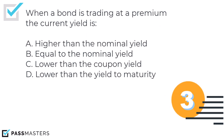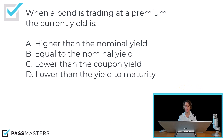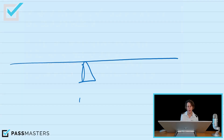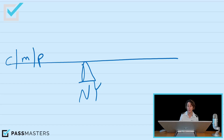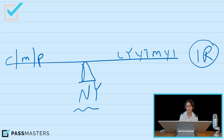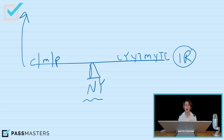Our last question for this video. When a bond is trading at a premium, the current yield is: higher than the nominal yield, equal to the nominal yield, lower than the coupon yield, or lower than the yield to maturity? How should you answer this question? With the teeter-totter, of course. The nominal yield never changes. We have the market price on one side, and the driver of the teeter-totter is interest rate changes relative to the nominal yield. There is current yield, yield to maturity, and yield to call. Here the bond is trading at a premium, so the bond market price is higher than par.